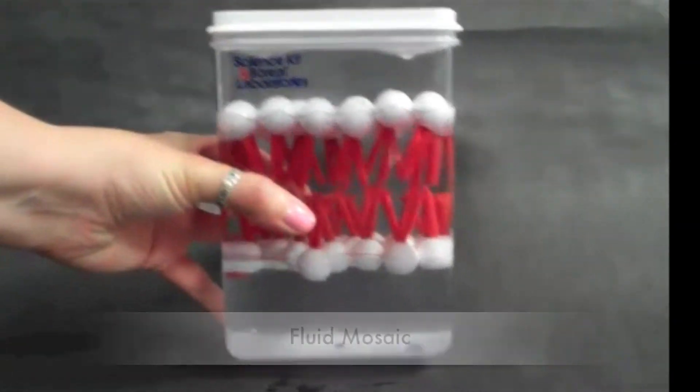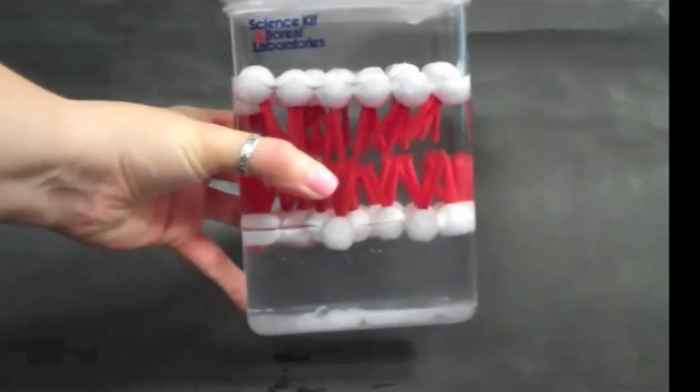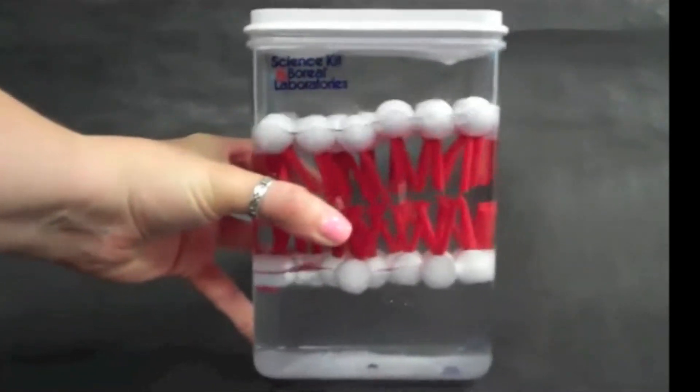Scientists describe the cell membrane as being a fluid mosaic. The phospholipids are not stuck to each other. They are fluid and can move around.